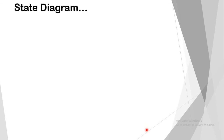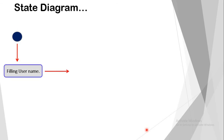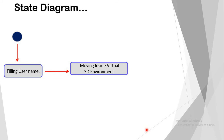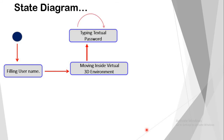Now let's see the state diagram. By this, you can get an idea about how this 3D password works. First, the user enters the system by filling in the username. After entering it, the user moves into the 3D virtual environment step by step. Then the first step is typing a textual password. After typing it and pressing a specific key, the user enters the next step.